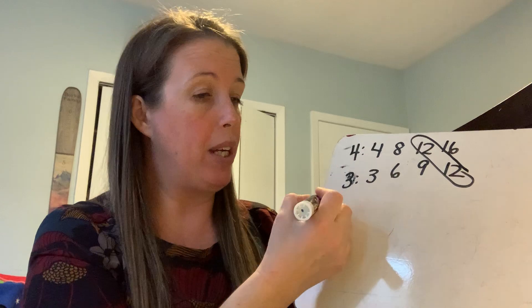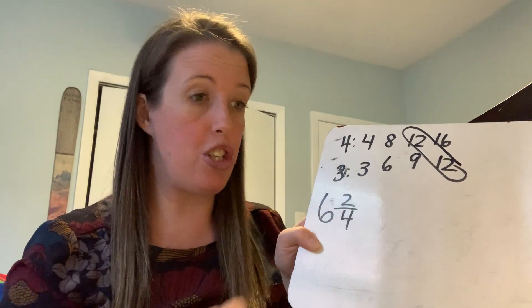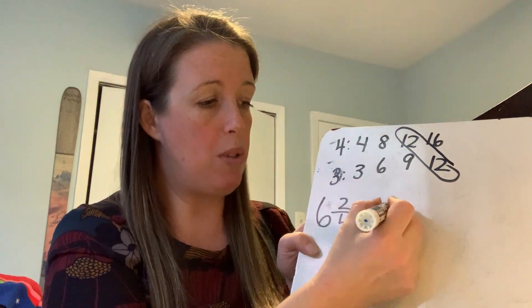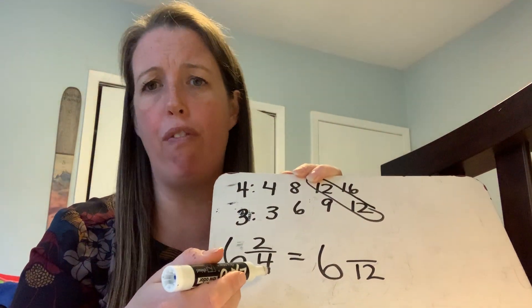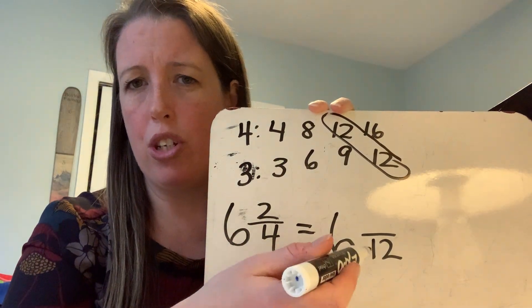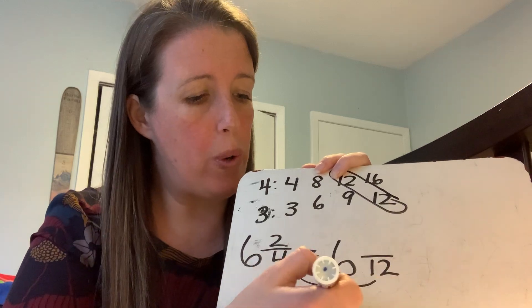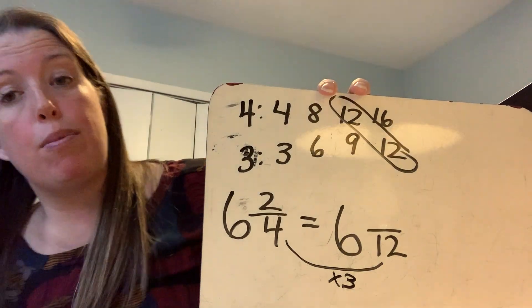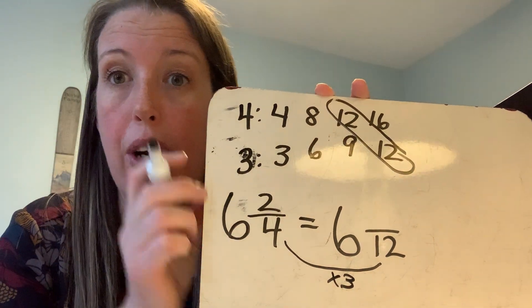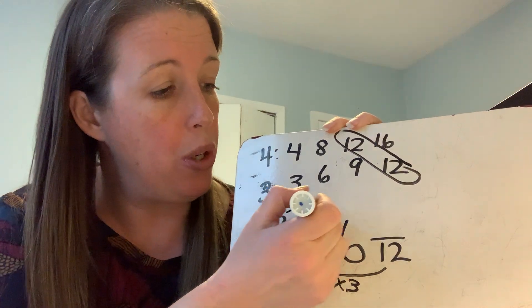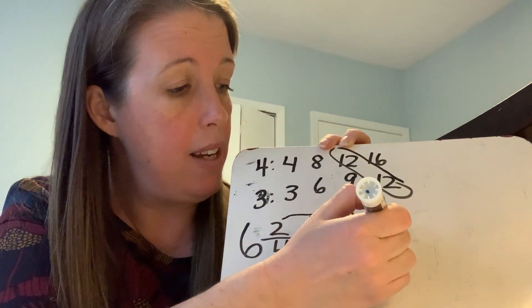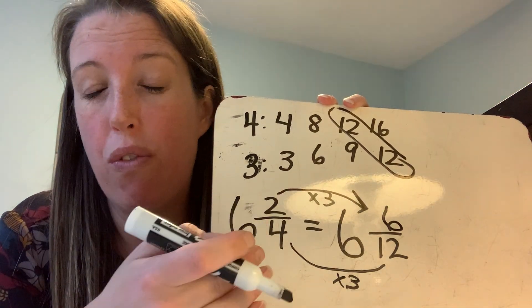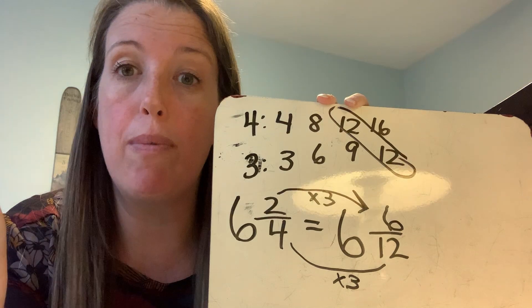I like to rewrite the original mixed number. It was six and two-fourths. I'm going to change this to six, but now my denominator is going to be twelve. I ask myself: I started with a denominator of four — what did I have to do to turn it into twelve? I had to multiply by three. The big rule with fractions is whatever you do to your denominator, you have to do to your numerator. So I multiply my numerator two by three, and my new numerator is six. Quick check: two-fourths is half, and six-twelfths is also half — so I've made an equivalent fraction.